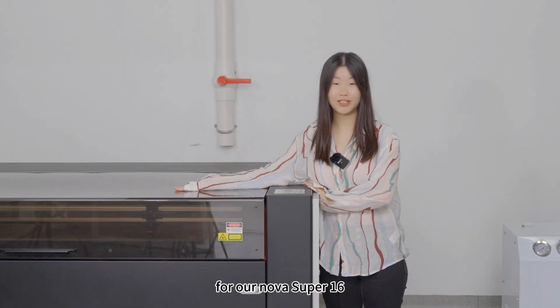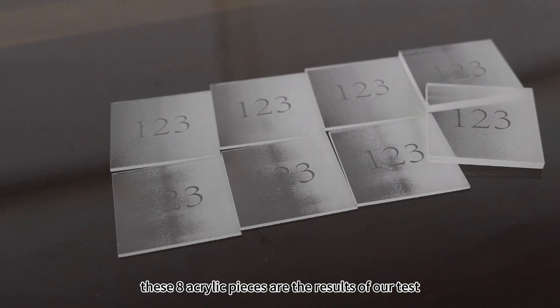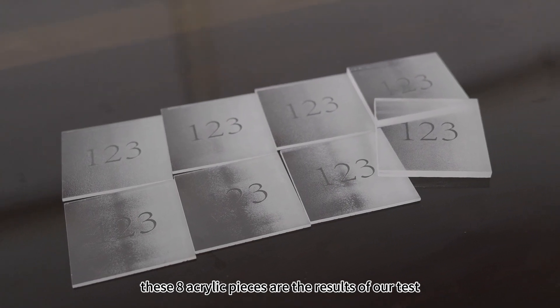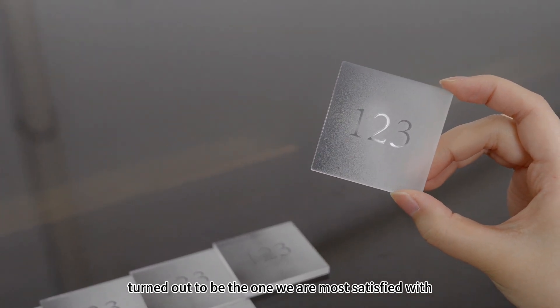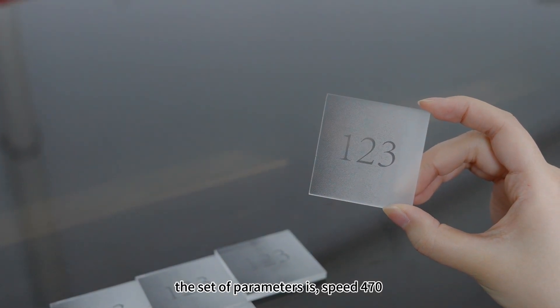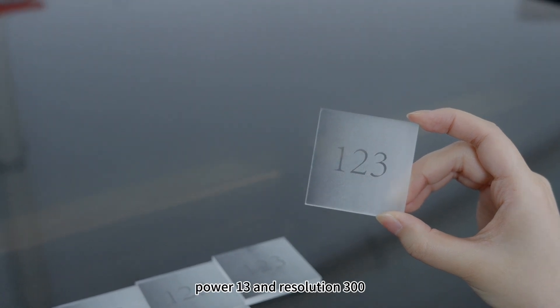For our NOVA Super 16, we recommend starting the test with a speed of 400. These 8 acrylic pieces are the results of our test. This piece turned out to be the one we are most satisfied with. The set of parameters is speed 470, power 13 and resolution 300.